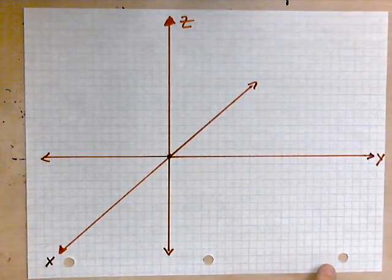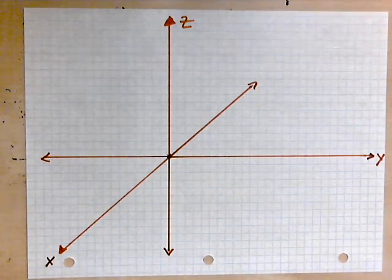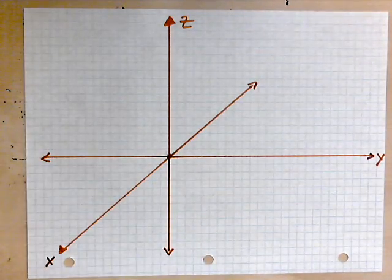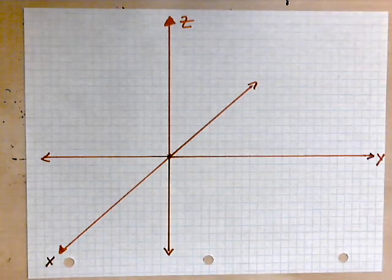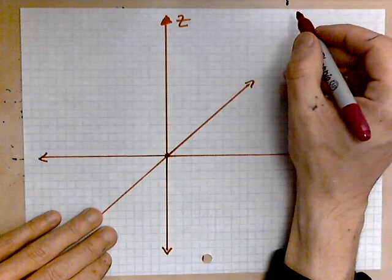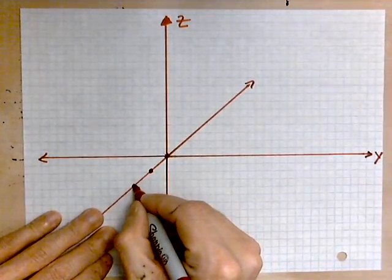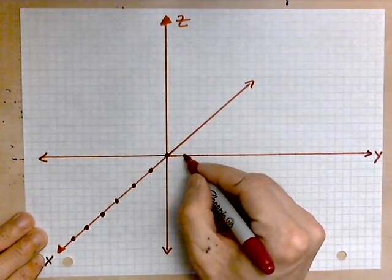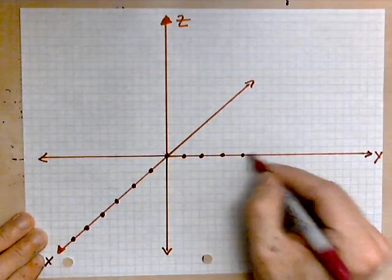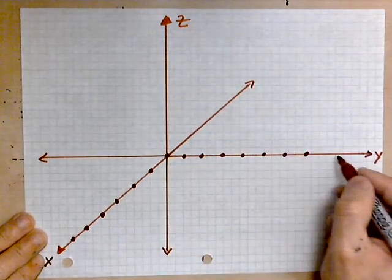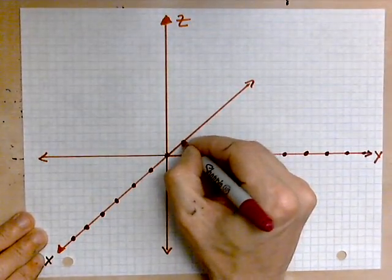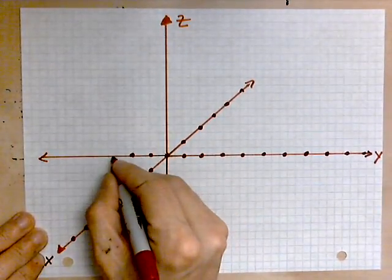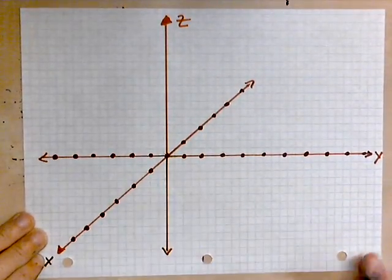Now we start plotting points within this coordinate space. You can imagine this plays a huge role in video games — being able to depict things in three dimensions. Of course, we are doing this on a two-dimensional surface like a piece of paper. In this space, I would say mark little dots along the axes. Some people use little lines, but the lines can get a little more messy than the dots, so use little dots as I'm doing here.